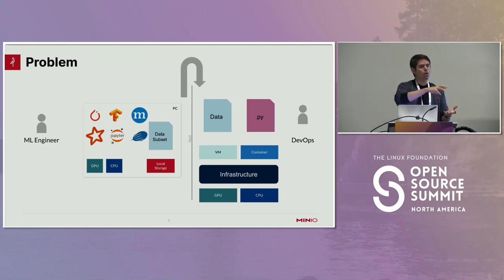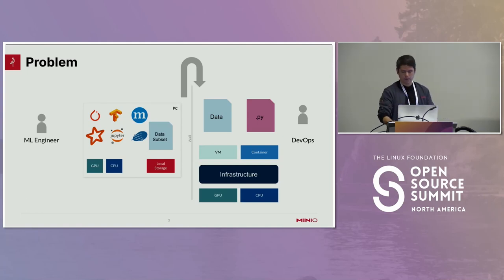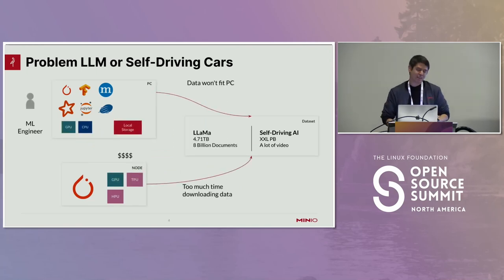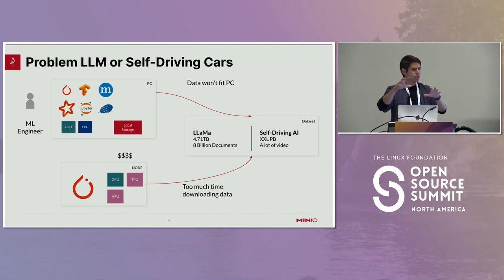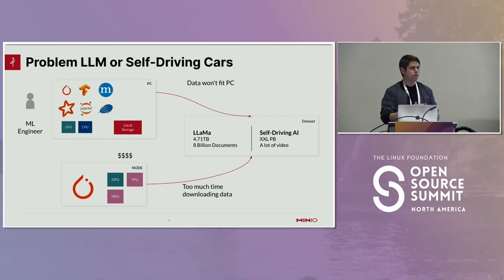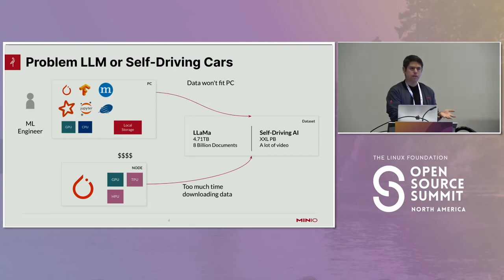When we start coming into more modern machine learning pipelines, the problem becomes a bit heavier. Once you've built all these machine learning models — the two trendiest right now are diffusion models and large language models — if you were trying to train your own version of LLaMA, for example, they publish the paper and the dataset is public. That dataset is 4.71 terabytes in size. That's not a dataset you can even fit in a laptop, so even if the engineer was trying to work with this dataset, he will have a hard time.